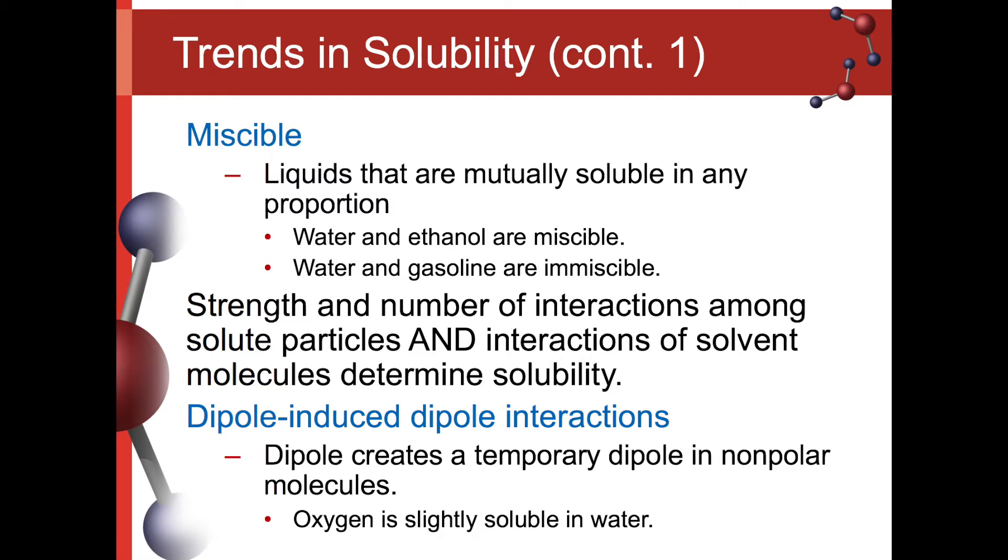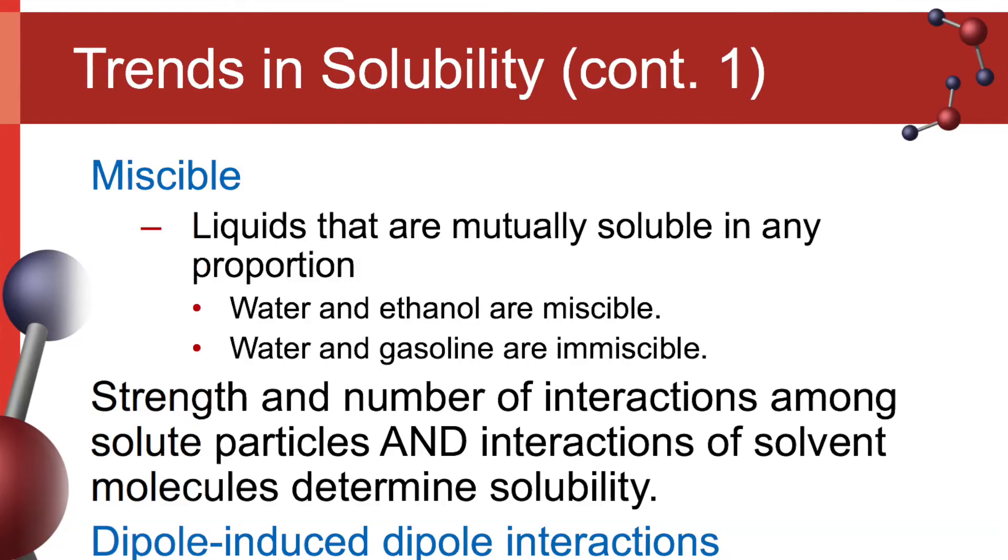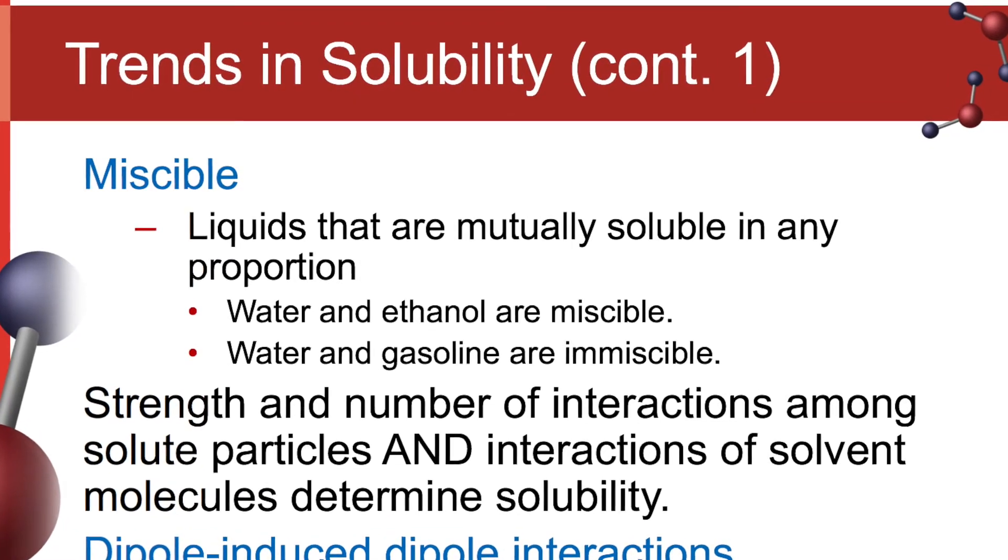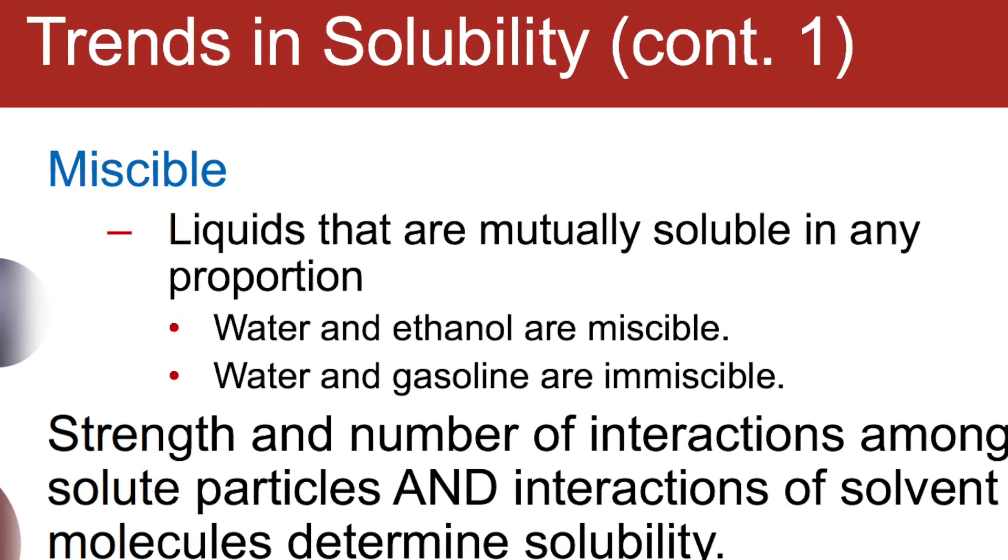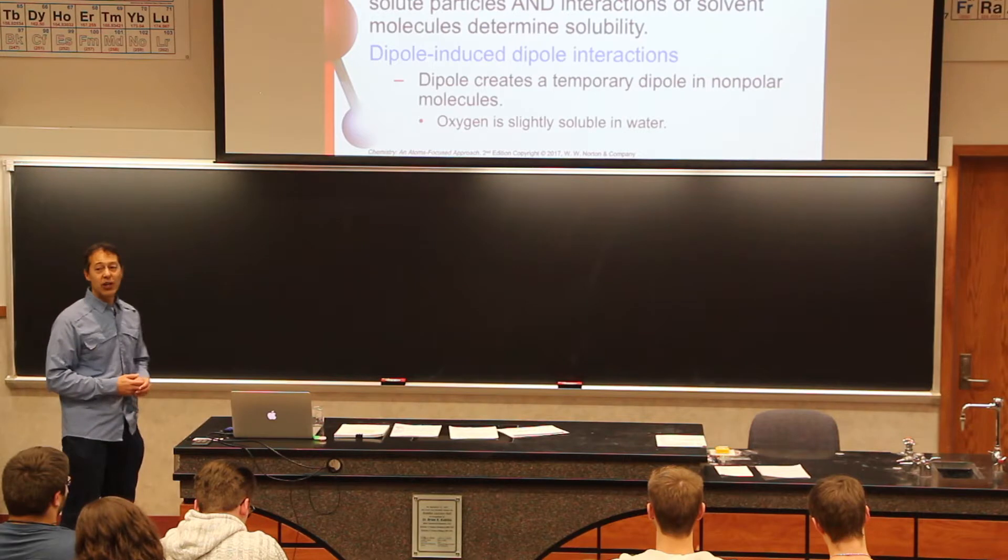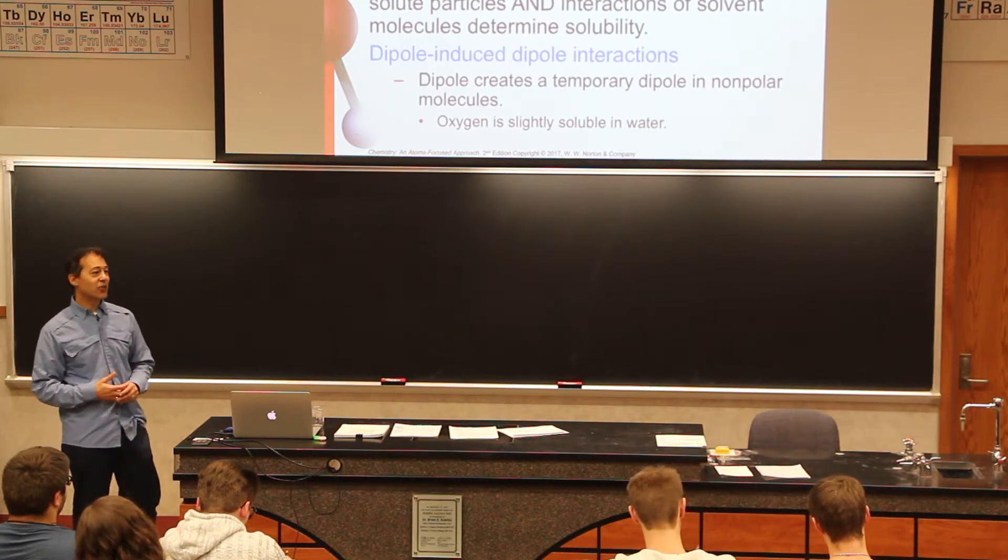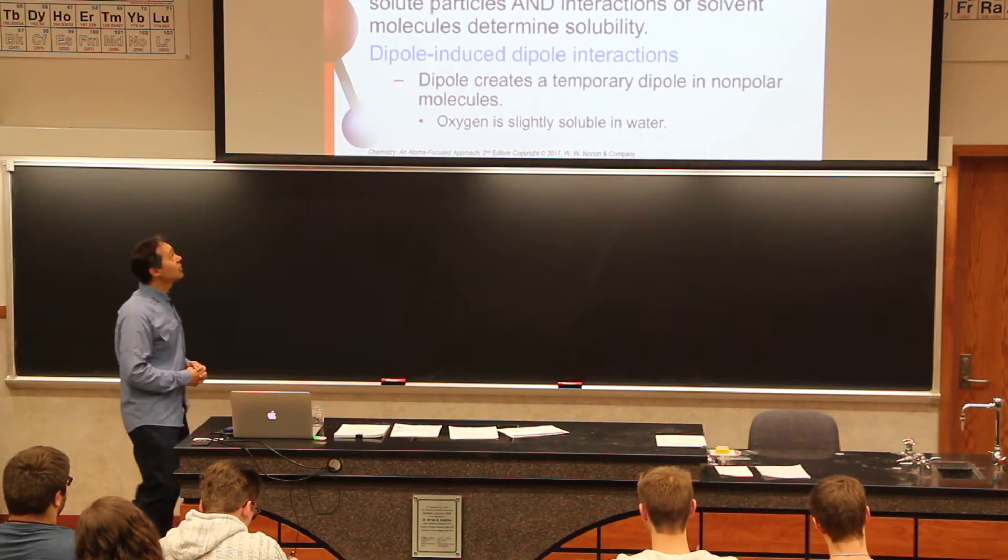If things can mix in any proportion, any amount, we call this miscible. That's one of these five dollar words that say that things can mix in any proportion. Water and alcohol are miscible. It doesn't matter if you have 1% alcohol solution or 99% alcohol solution. They totally mix. That is a miscible solution.